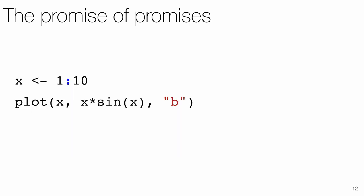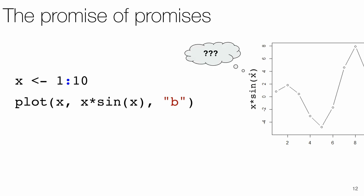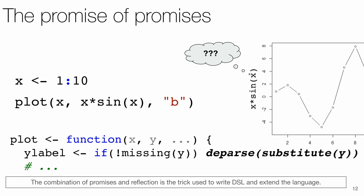R is well known for providing easy access to nice plots. All it takes to get a plot is calling this built-in plot function. One might wonder though, how does R know to put the right label to the y-axis without us ever telling it to? The solution, of course, makes use of promises. If we dig a little deeper, we find that the plot function uses the functions deparse and substitute to get the character string versions of the actual arguments. Similar tricks are common to build DSLs in R.